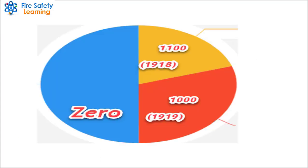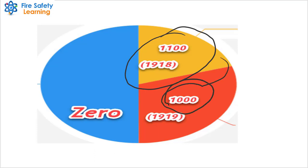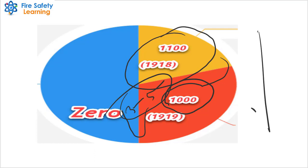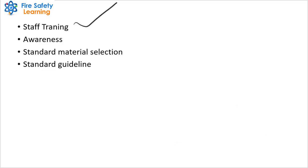For example, you are a fire safety officer. As per incident statistics, 1918 mein 1100 incidents huye. Aap ne kuch efforts kiye aur 1919 mein accident rate 1000 reh gaya. But now you want ki yeh incident rate agle 3 se 5 salon mein zero tak pahunch jaye. So your planning is reducing accidents to zero level in the next 3 to 5 years. To achieve this goal, activities like training of staff, public awareness, material selection, and making standard guidelines or SOPs are needed.